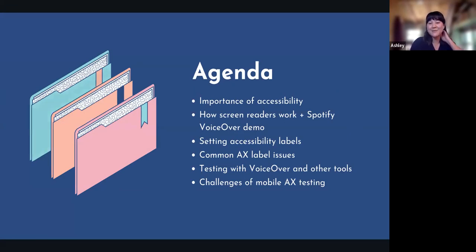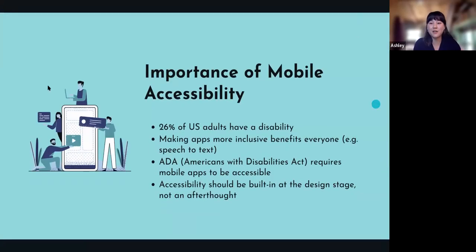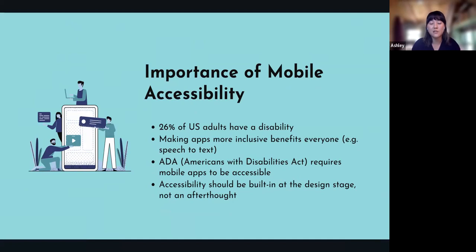First, I'm going to talk about the importance of mobile accessibility. 26% of US adults have a disability. I think when we talk about accessibility, people often say it's a really small percentage of the user base that we actually have to think about when developing apps and making them accessible — but it's just really not true. A quarter of US adults have a disability.